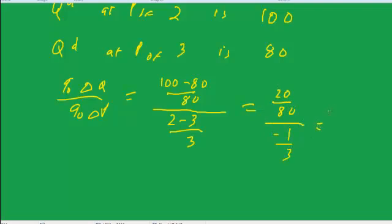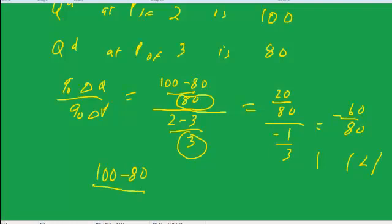What a lot of textbooks advocate is, instead of calculating the elasticity at a point like this, for the denominator, they advocate using the midpoint. So instead of using 80, we'll do halfway between 180, so let's try that. 100 minus 80 over the average of 180, which is 90.